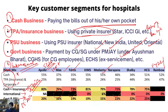Government and PSU business is very high in the case of hospitals like HCG and Narayana. If a hospital is running at low occupancy, it makes sense to take government and PSU business as it helps meet some of the overall overheads. But out of all three segments, the most profitable business is international, the second most profitable is cash and insurance, and government business is one of the least profitable.